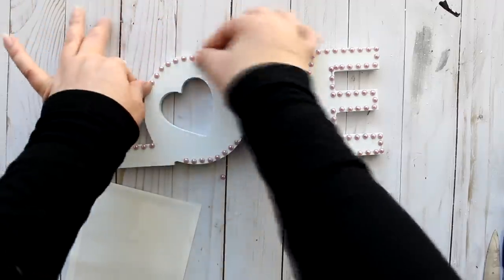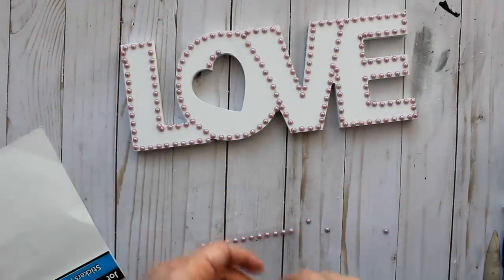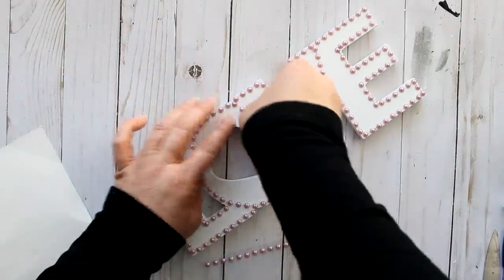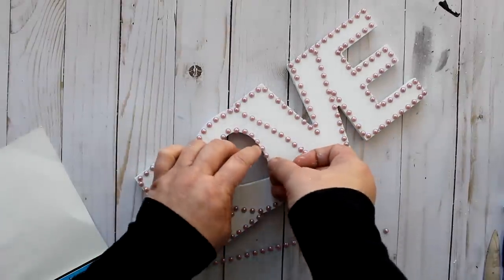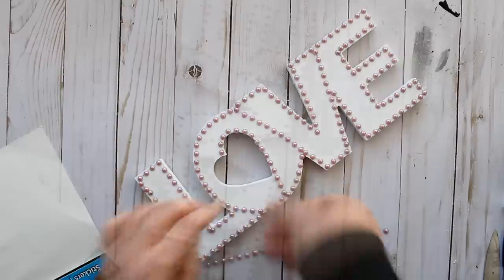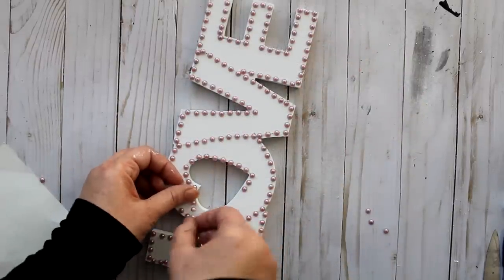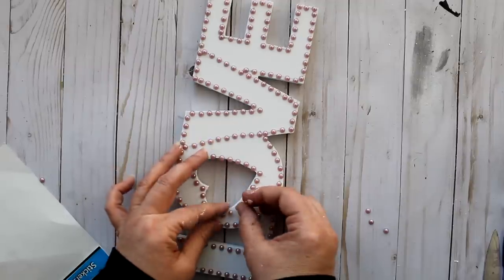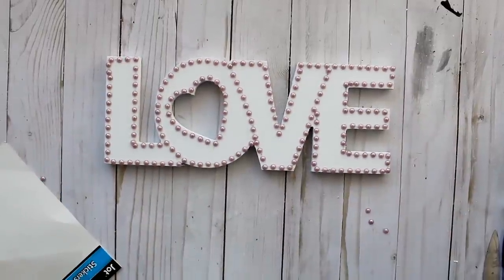At Christmas we had a Christmas miracle when some greens fit perfectly around a box in a Christmas DIY, and now it appears as though we have a Valentine miracle because these pearls, one pack of these pearls, perfectly outlined this love sign. And it's as simple as that. All done!